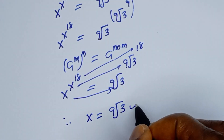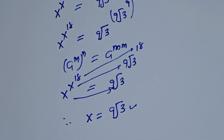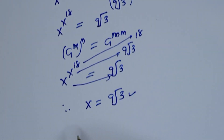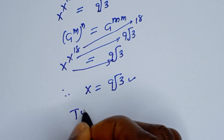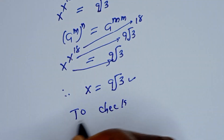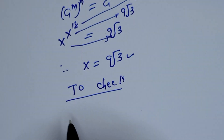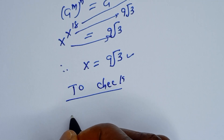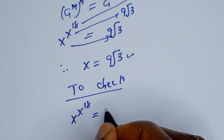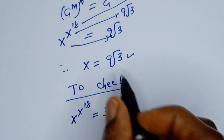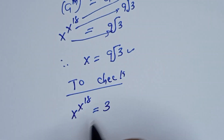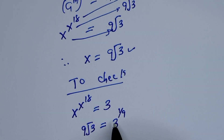This is the final answer. We can check to confirm if our answer is right or wrong. To check, we substitute back into the original equation: x to the power of x to the power of 18 is equal to 3. When x is equal to the 9th root of 3, then the 9th root of 3 is equal to 3 to the power of 1 over 9.